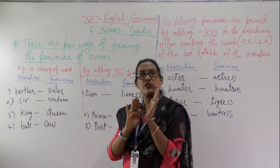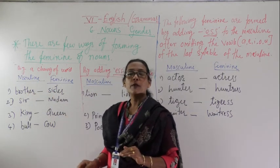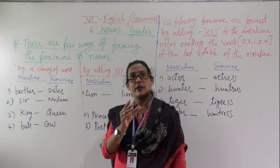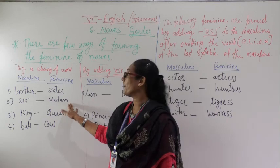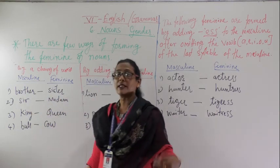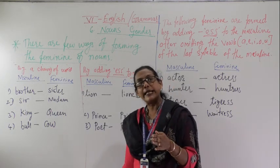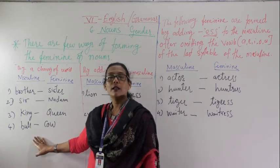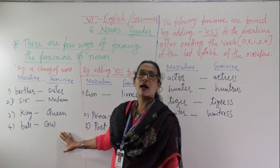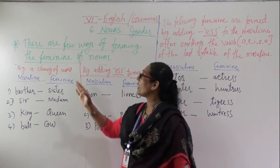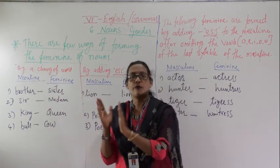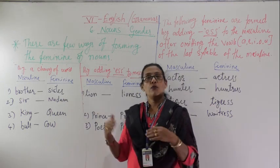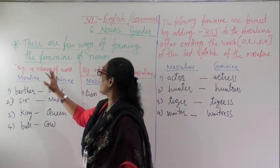The first method is by change of word — completely changing the word. For example, masculine is Brother; by completely changing the word, the feminine is Sister. Then Sir — Sir is a completely different word from Madam. Sir is used for a male teacher and Madam for a female teacher. King becomes Queen. Bull becomes Cow. Father becomes Mother. That is the first method: by change of word.